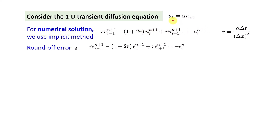When solving u_t = α·u_xx with the implicit method, we get a difference equation: -r·u_{i-1} + (1+2r)·u_i - r·u_{i+1} at the (n+1)th time level equals u_i at the nth time level, where r = α·Δt/Δx². The round-off error follows exactly the same equation, since it is the difference between solutions on finite and infinite precision machines.